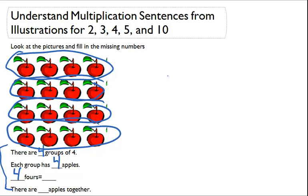Which means, another way to put it is 4 times 4. Which means we can count up the total number of apples and that's going to give us the answer to the multiplication sentence.